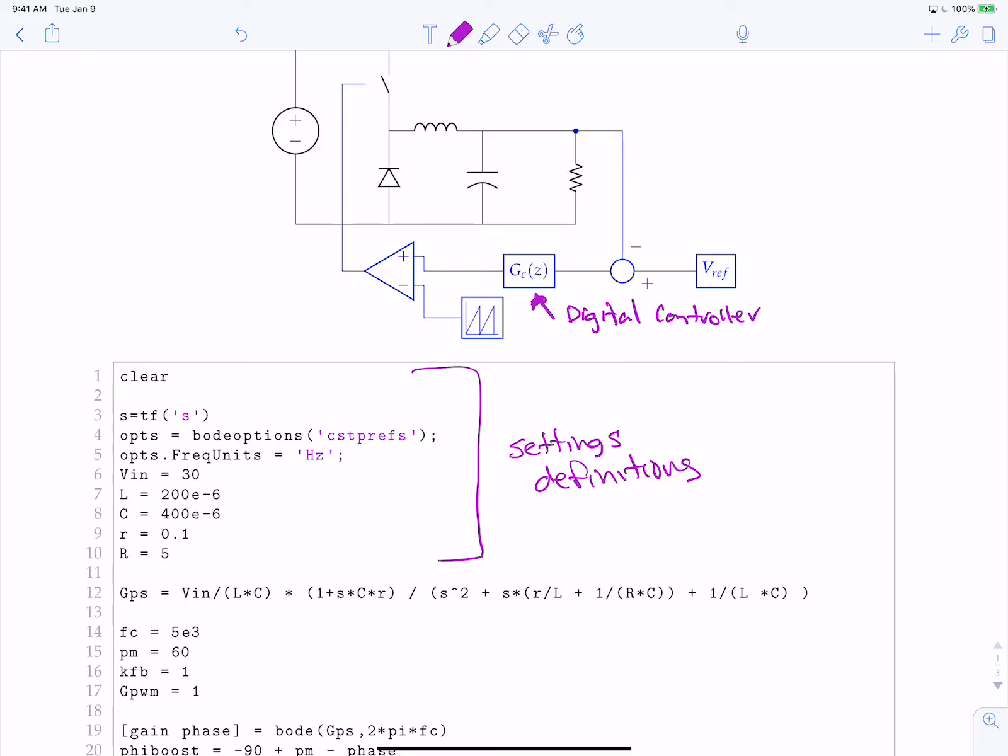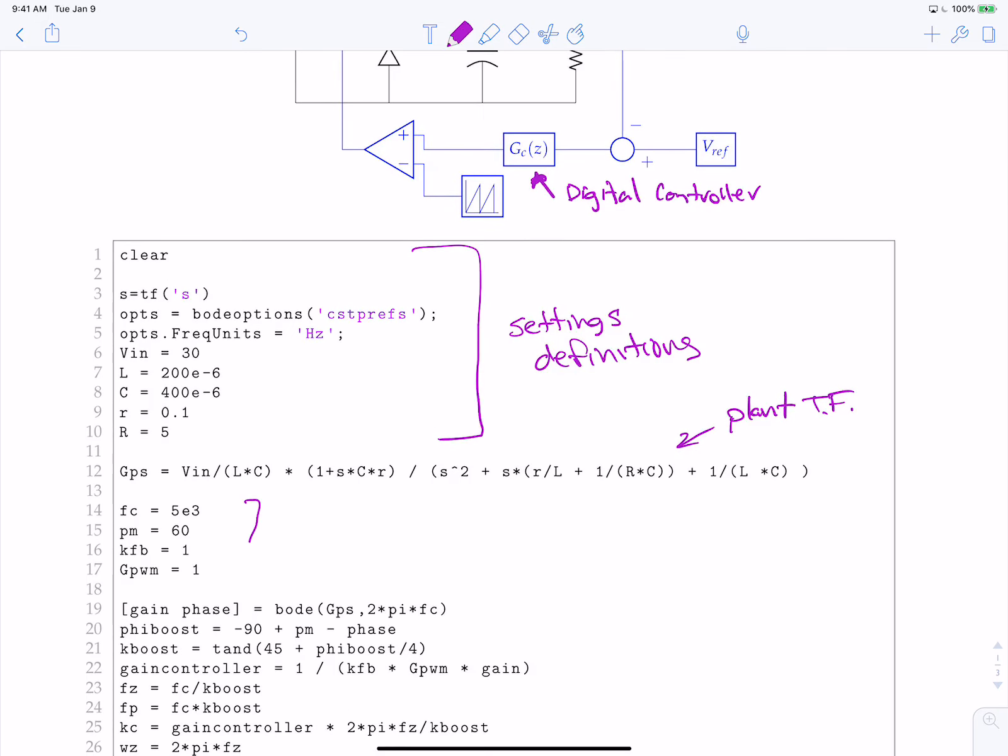This is our plant transfer function. These are controller design inputs. So essentially selecting the bandwidth, the phase margin, etc.